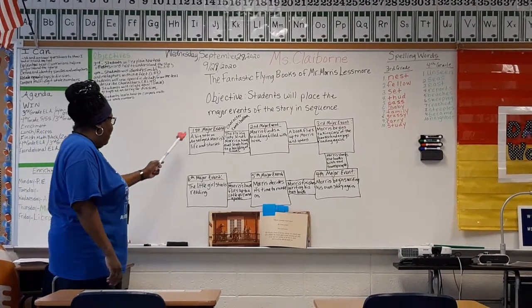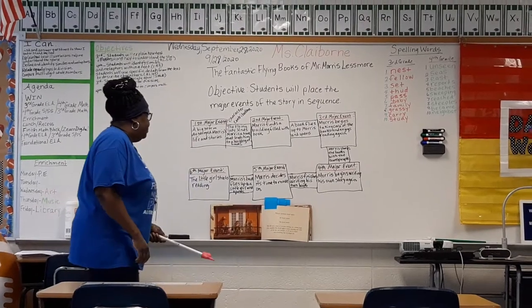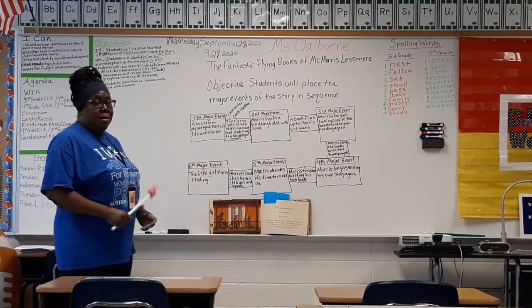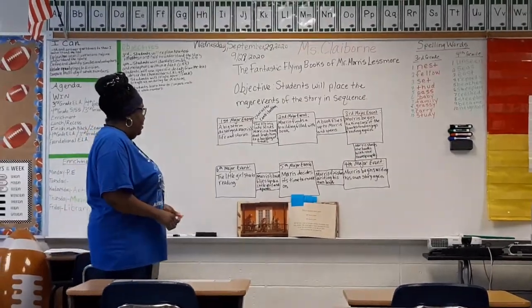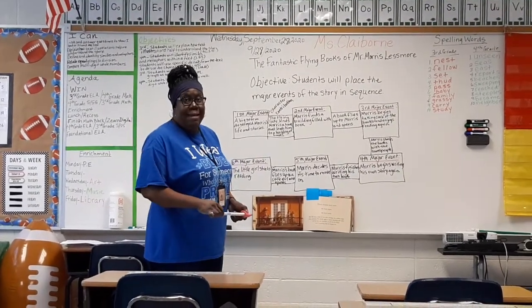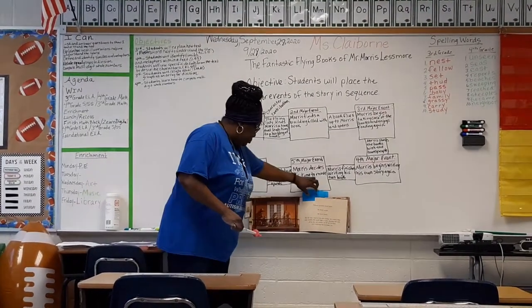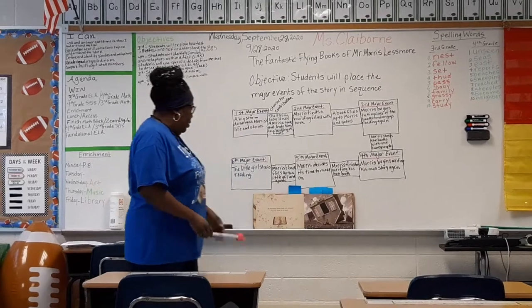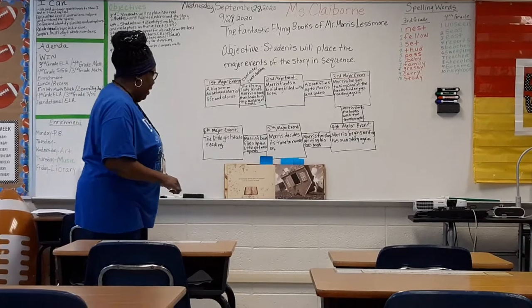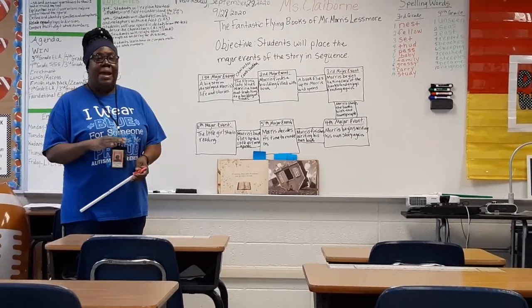As you can see, my major events are underlined in red. Now our first major event of the story is a big storm destroys Morris's life and all of his stories, which are his books. As you can see in the book, we have Morris. His house has been turned upside down and everything — all of his books, the pages, the letters — have been scattered.